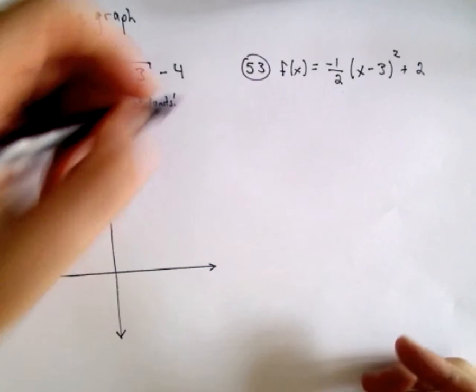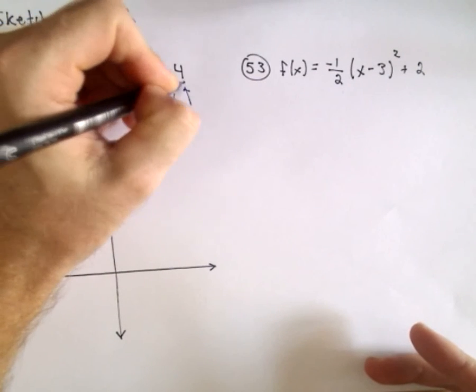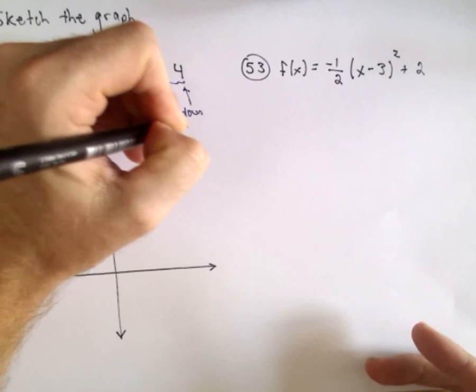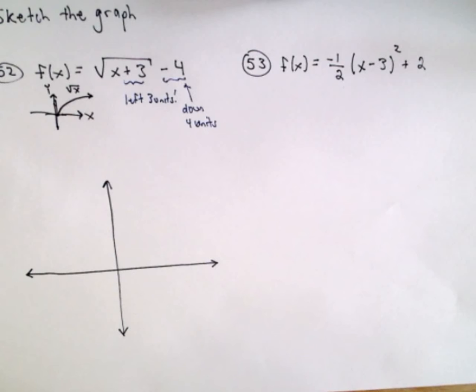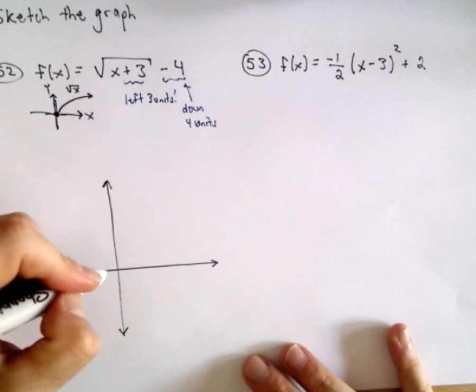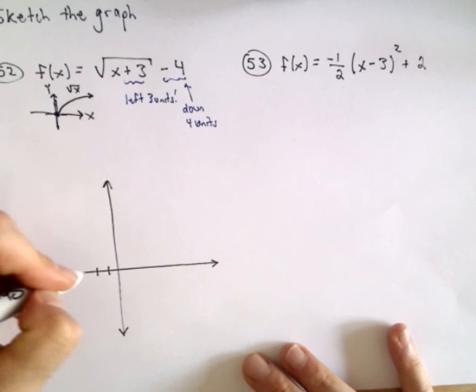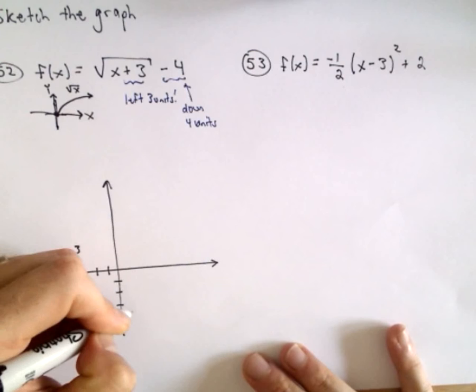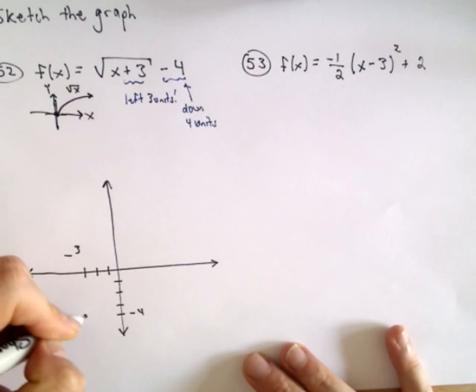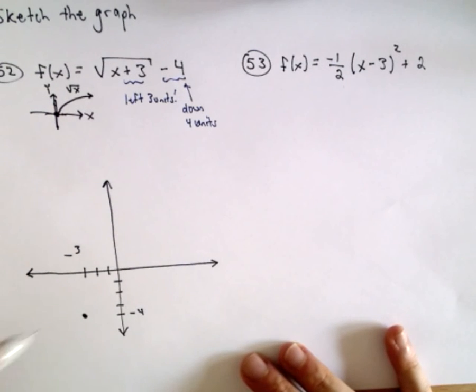The negative 4 that's hanging out on the outside, that's going to move it down four units. But then it's going to still have the same shape and the same bend. So instead of starting at (0,0), it's going to start down here at the point (-3, -4).